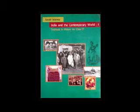French society in the 18th century was divided into three estates, and only members of the third estate paid taxes. The society of estates was part of the feudal system dating back to the Middle Ages. The term 'old regime' is usually used to describe the society and institutions of France before 1789. Peasants made up about 90% of the population, but only a small number owned the land they cultivated. About 60% of the land was owned by nobles, the church and other richer members of the third estate. The members of the first two estates — the clergy and the nobility — enjoyed exemption from paying taxes to the state.